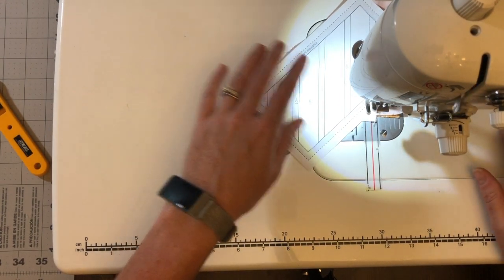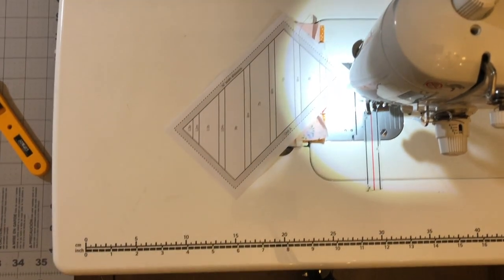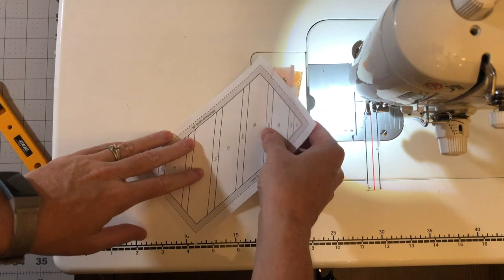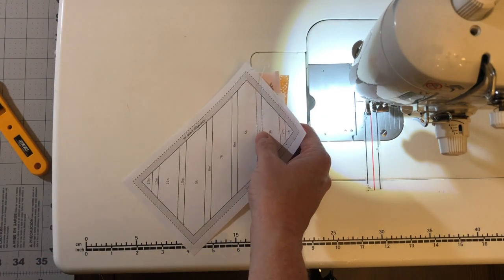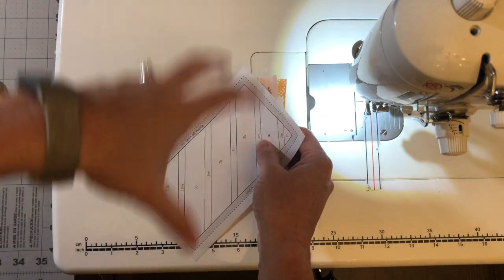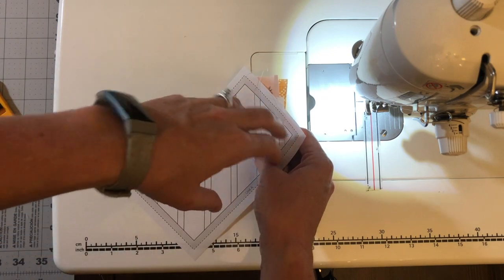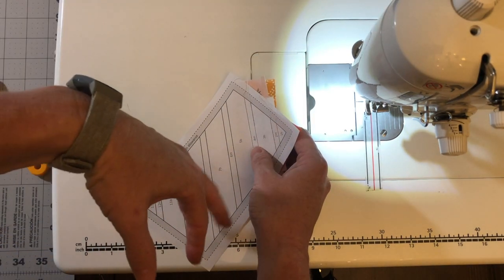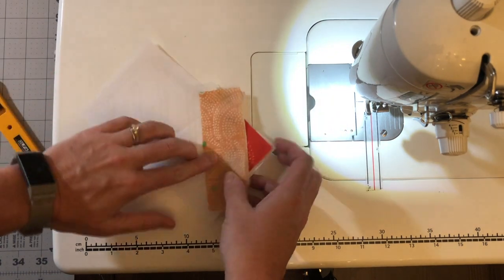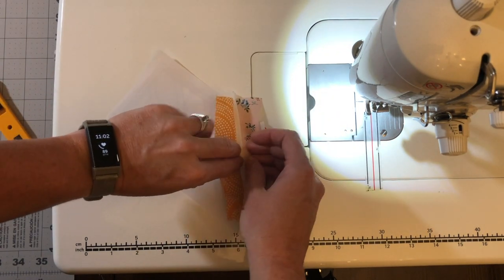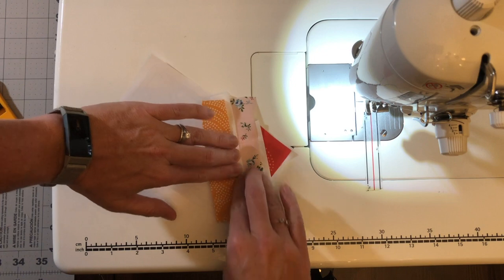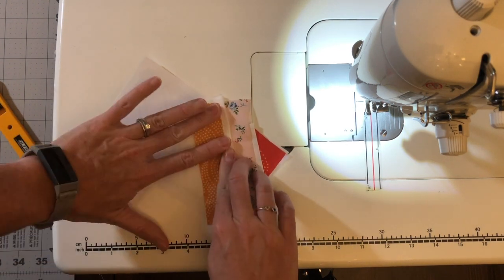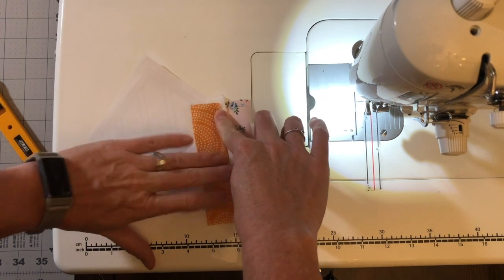Once you get going and kind of get the hang of it, it's easy to get into a groove. I will also say if you really get the hang of it and really are enjoying it, it is possible to chain piece paper piecing. So you could have several of these templates going at once. You do pieces one and two, like multiple blocks at once. And then you add the third piece multiple blocks at once. That's actually what I did when I was making my original quilt. I've had a lot of experience paper piecing though. And if you do that, you just got to make sure you stay organized. So you're pulling the right pieces at the right time.